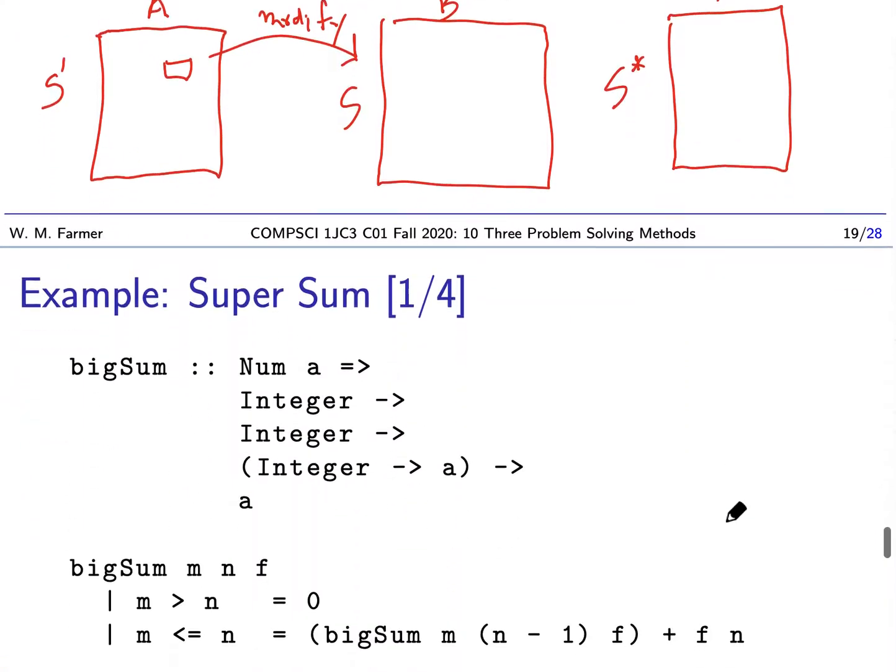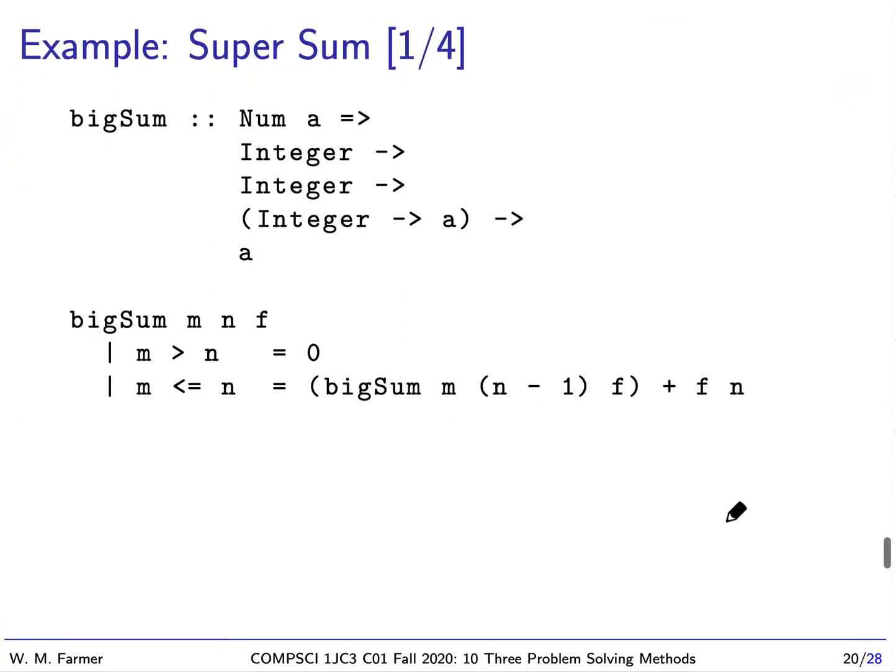So I'm going to illustrate that on something which I'm going to call Supersum. So if you remember, we had this function called BigSum. BigSum computes this sum of f of i. And it has three inputs, m, n, and f. Notice i here is really a dummy variable. And here's the definition. You've seen it before.